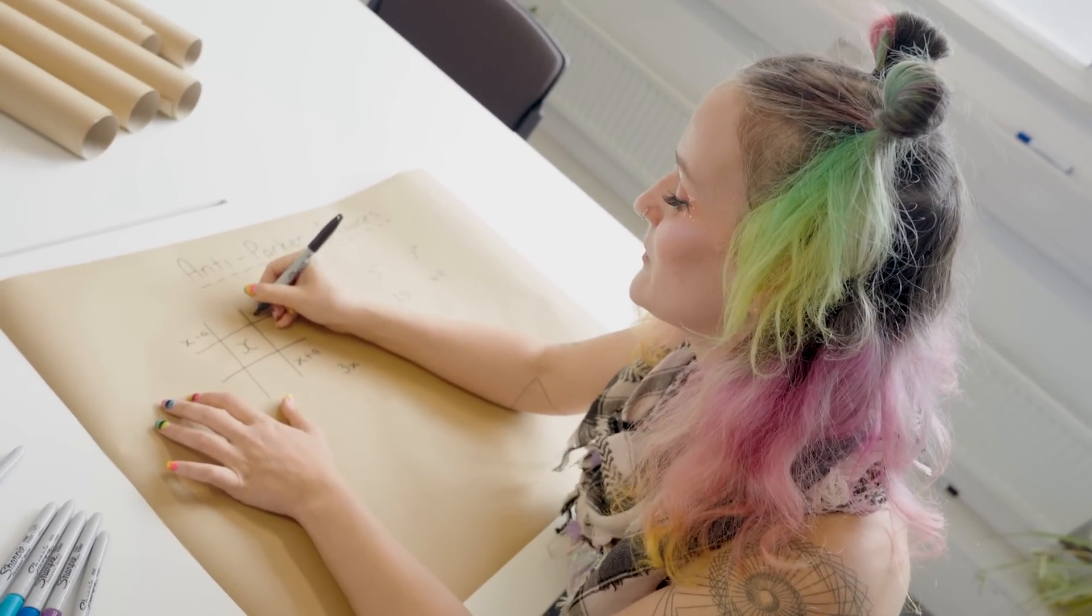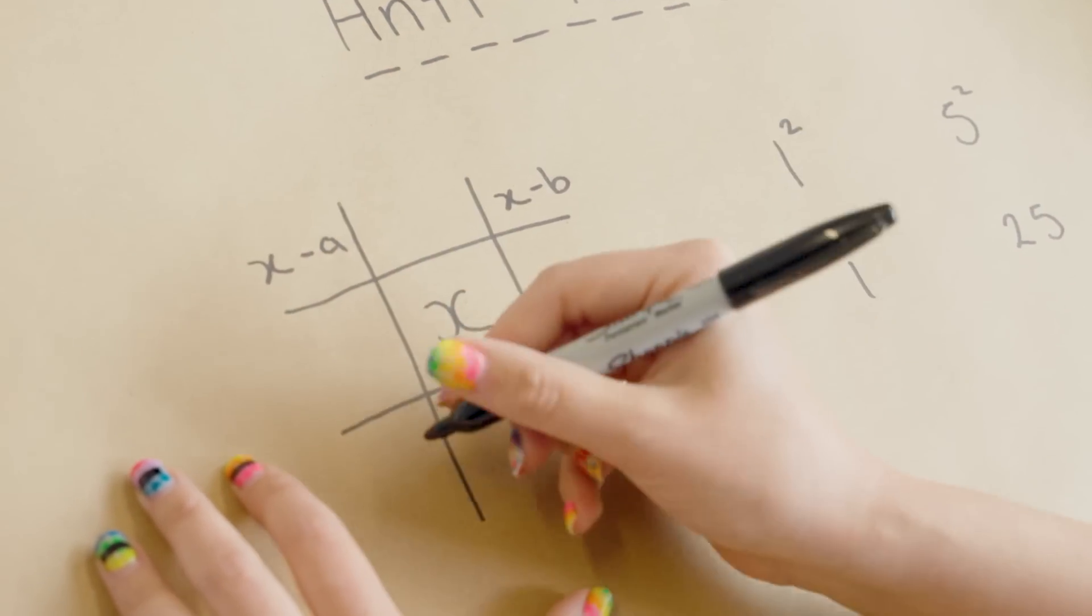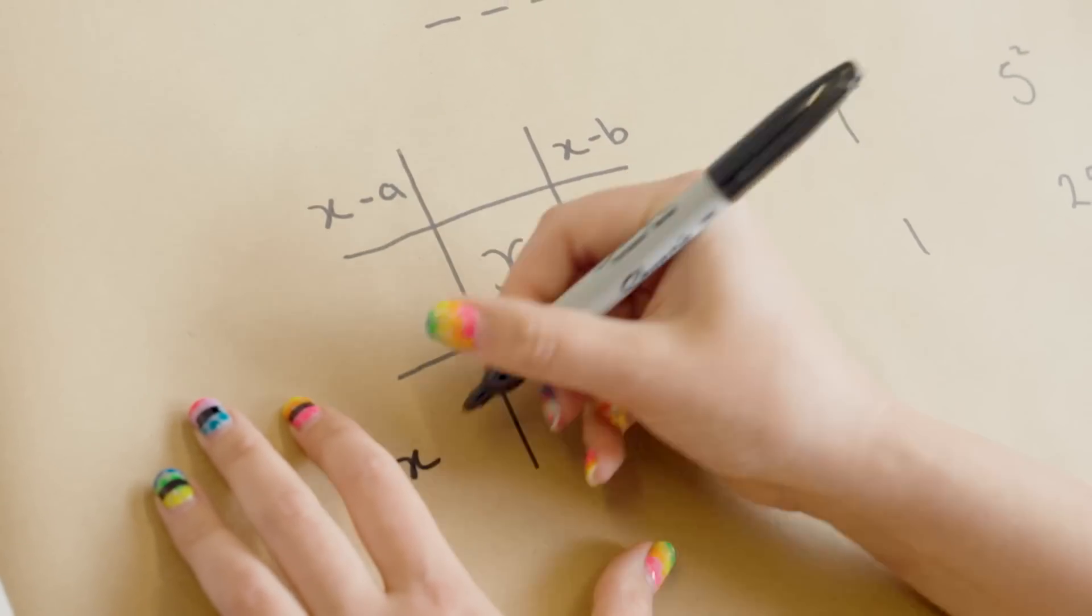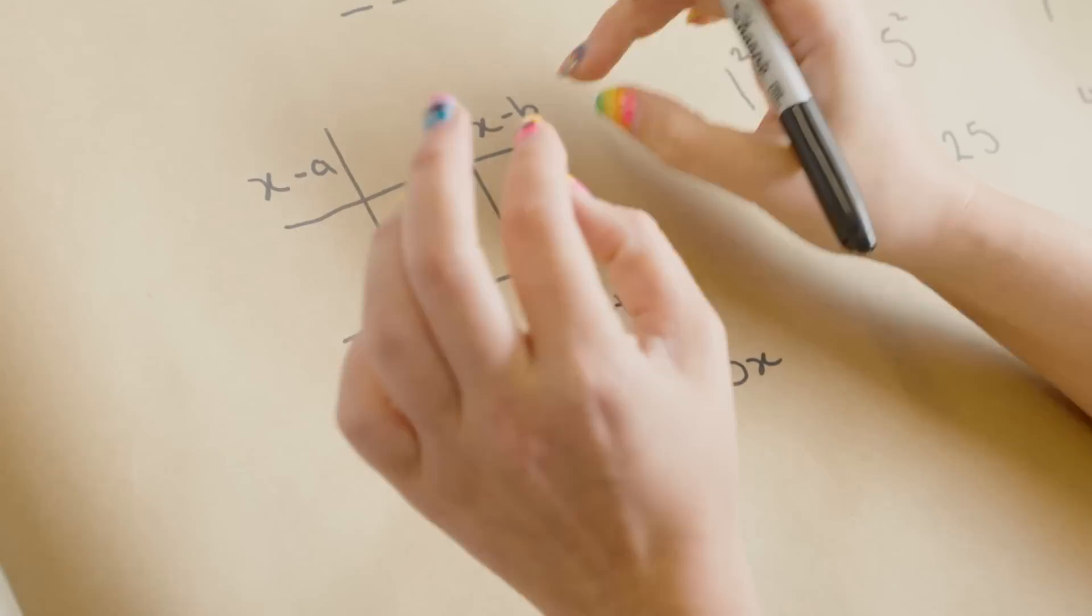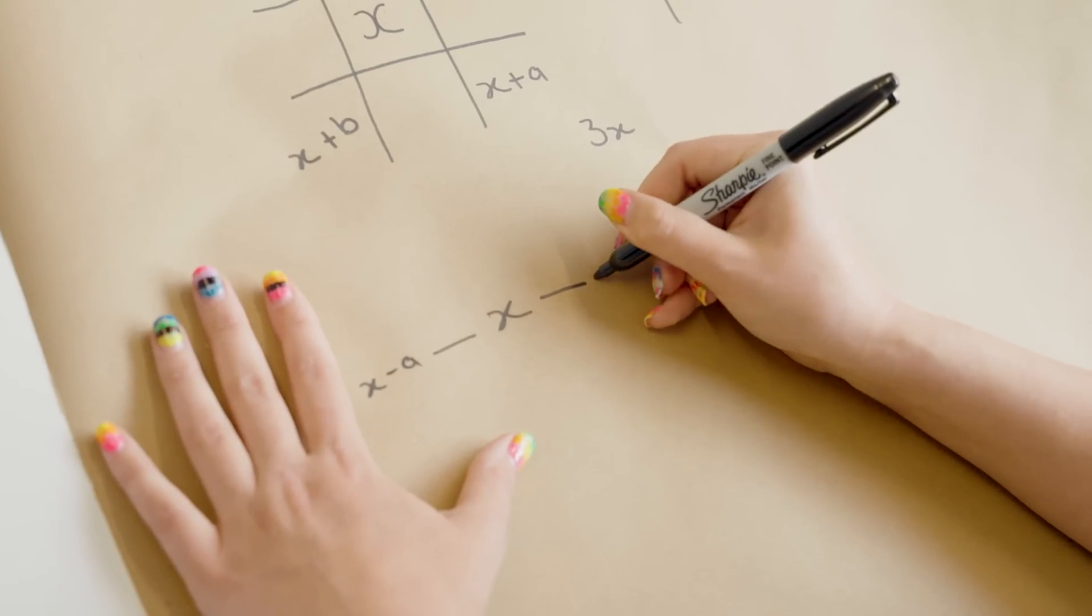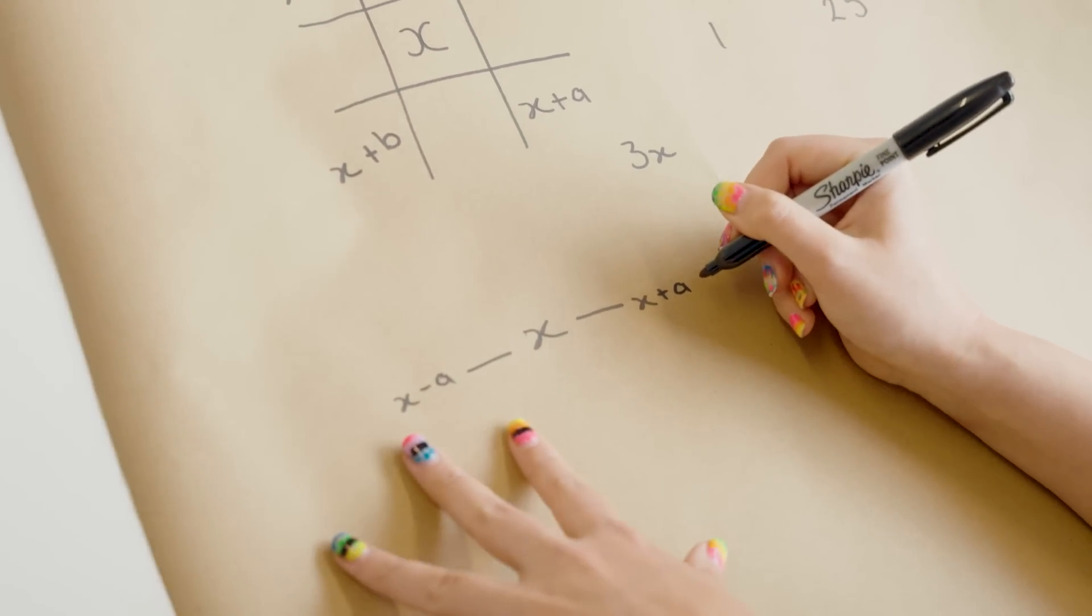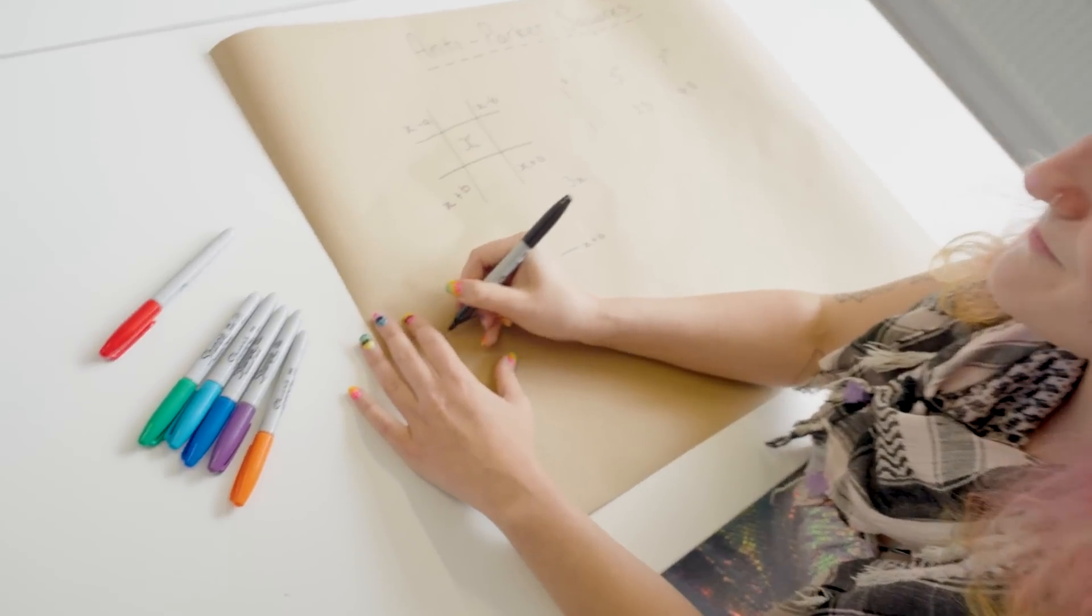And we want all of the numbers to be different. So I'm going to call this one x minus b. They're all going to add up to three x. So that means to balance it out, this is going to be x plus b. So now what this has created is a number x in the middle, which then needs to be equidistant from x minus a and x plus a, and all of these are square. And it needs to be doubly equidistant.